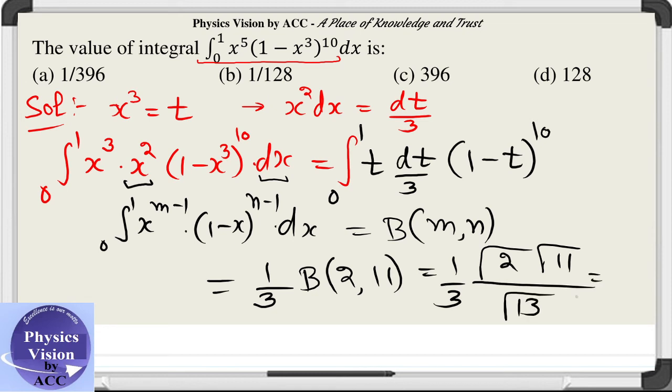By using the value of this, gamma 2 is factorial 1, 11 gamma is 10 factorial, 13 gamma is 12 factorial, and 3 is there outside this bracket. Solving these values, we got 1 by 396, that is option a as our correct answer to this question.